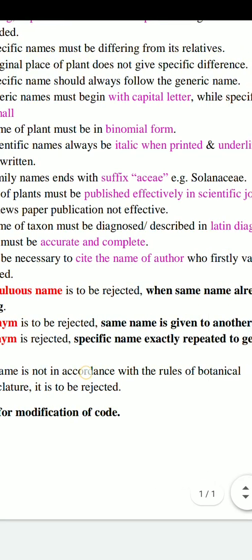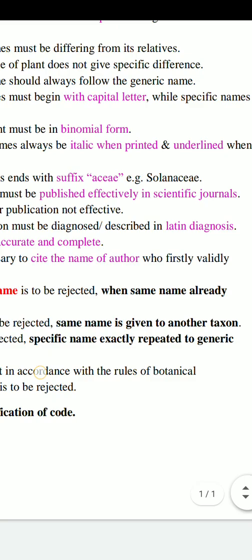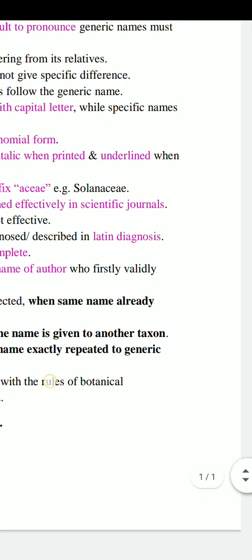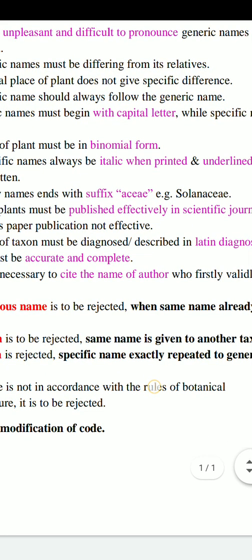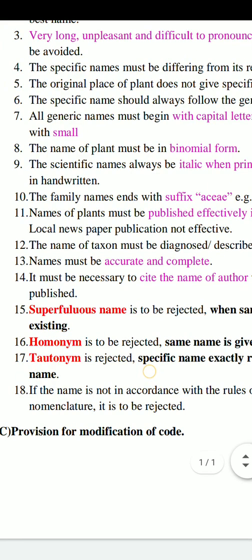Rule 12: The name of a taxon must be diagnosed or described in a Latin diagnosis — that means in Latin language. This is the scientific language and every plant description must be in Latin, not local language or even English. Rule 13: Names must be accurate and complete — their meaning must be scientific and complete.